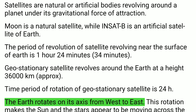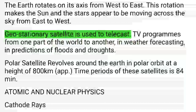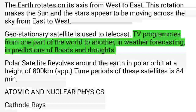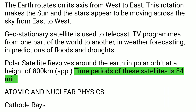The Earth rotates on its axis from west to east, making the Sun and stars appear to move from east to west. Geostationary satellites are used to telecast TV programs, in weather forecasting, and in predictions of floods and droughts. Polar satellites revolve around Earth in a polar orbit at a height of about 800 km, with a time period of 84 minutes.